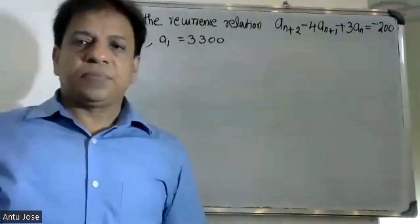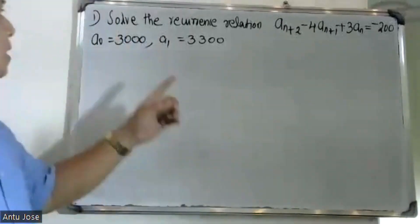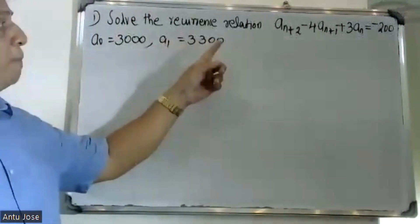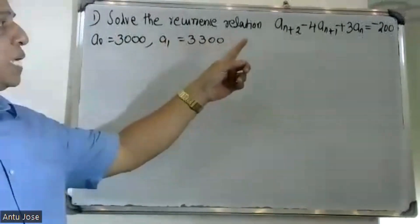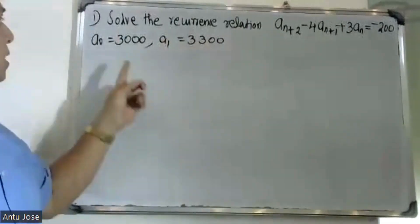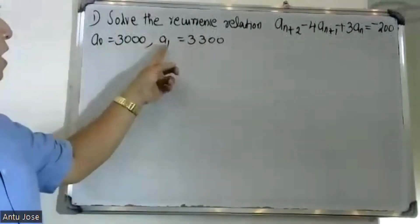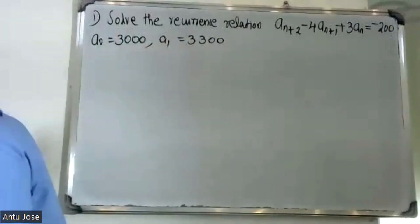Good morning students. Solve the recurrence relation: a(n+2) minus 4·a(n+1) plus 3·a(n) equals minus 200, where a(0) equals 3000 and a(1) equals 3300.